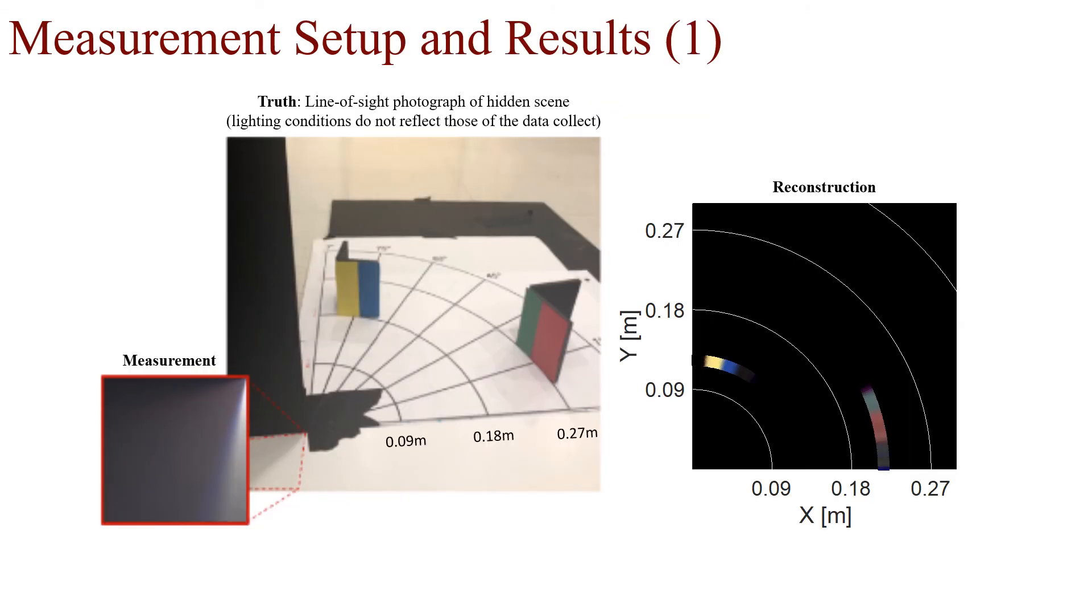Here is one measurement in scene with the corresponding reconstruction. In our reconstruction, we get incredibly high angular resolution with sharp edges between the color boundaries. Note that in the measurement, while you may be able to pick out two targets, it's impossible to discern range with the naked eye. In our reconstruction, the two targets are detected and placed in range correctly, with respect to each other.